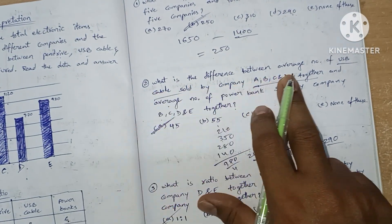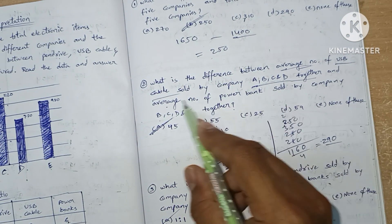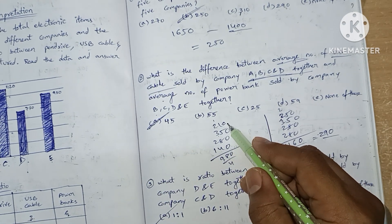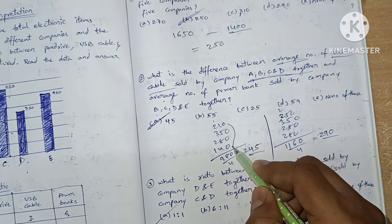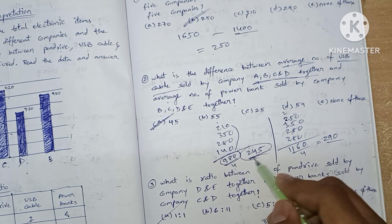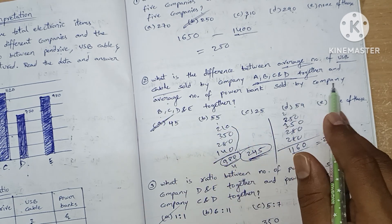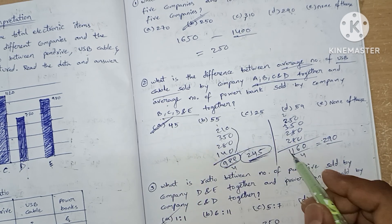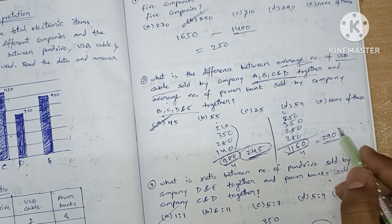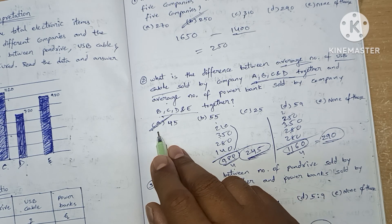Question two asked for the difference between the average number of USB cables sold by A, B, C, D and the average number of power banks sold by B, C, D, E. The average USB cables for A, B, C, D: total 980 divided by 4 gives 245. The total power banks for B, C, D, E is 1160, so average is 290. The difference between 290 and 245 is 45.